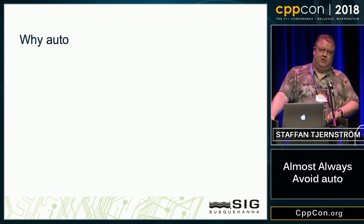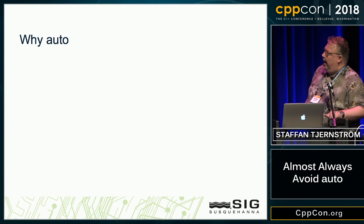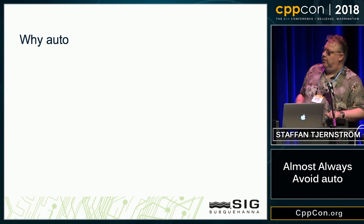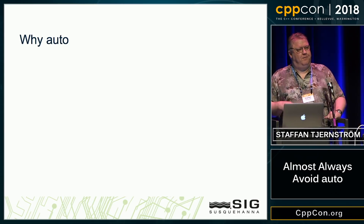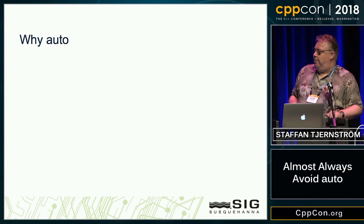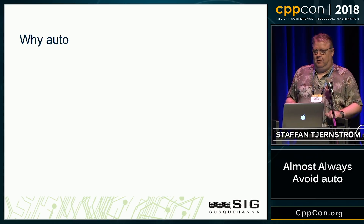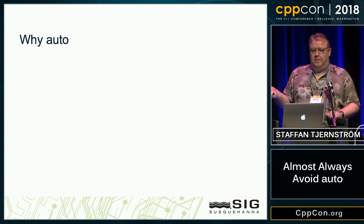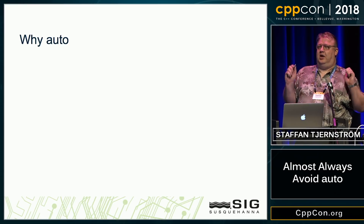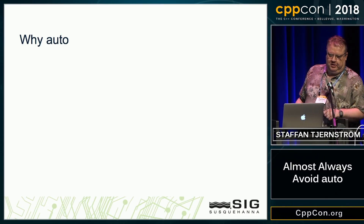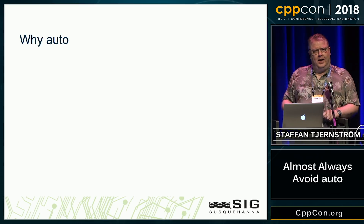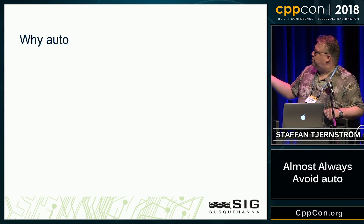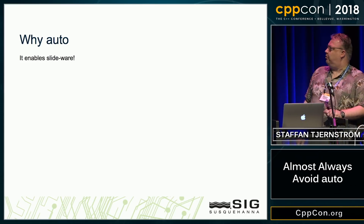The question then becomes, why auto? And I think to answer this, we have to look at the composition of our hardworking and underpaid volunteer committee members. They were faced in the early days with a large dilemma. Many of them would spend inordinate amounts of time traveling around the globe making presentations, trying to keep the spirit of C++ alive. And this leads me to probably the main reason why auto exists in the language: it enables slideware.